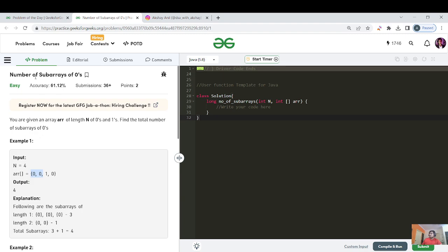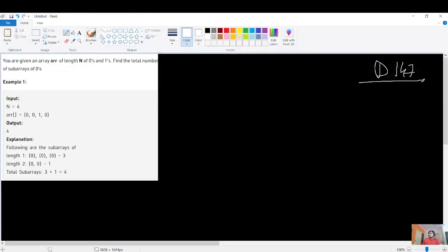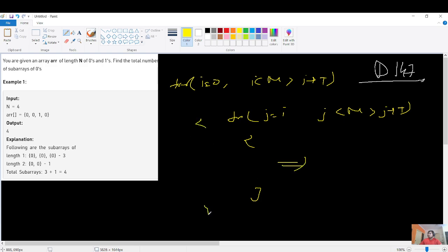In a lot of subarray problems where you need to find maximum sum, minimum sum, or any condition, the brute force is to form each and every subarray. To form all the possible subarrays we use a nested for loop: for j equals to i, j less than n, and j plus plus. This ensures you are forming each and every possible subarray. But this approach will take you the complexity of O(n squared).